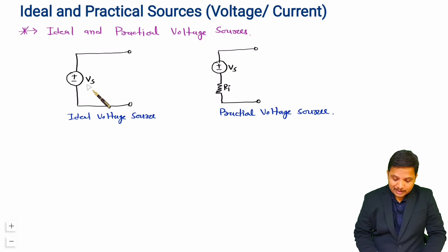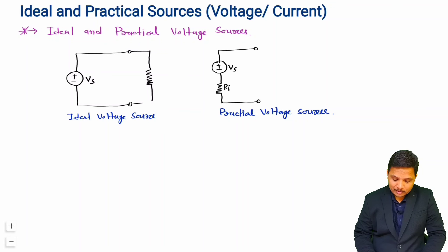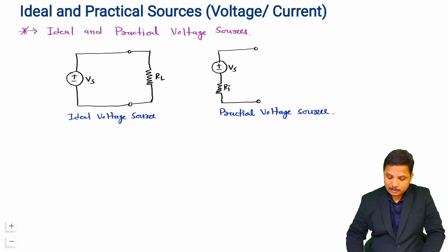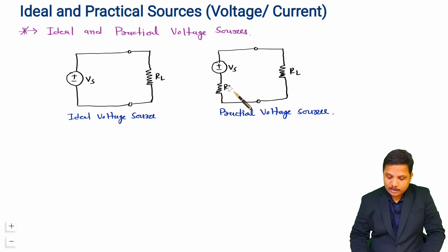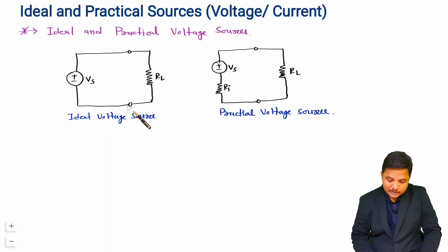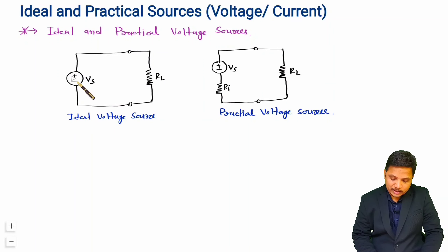When you connect Vs across a load with an ideal voltage source, the full Vs appears across the load, so constant voltage is delivered. But when you connect a load across a practical voltage source, Vs will drop by some quantity across Ri, so 100% of Vs voltage will not be delivered across RL. In summary: ideal voltage source has zero internal resistance in series, while practical voltage source has internal resistance Ri in series.